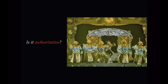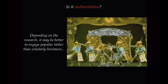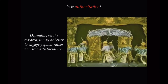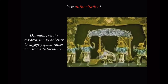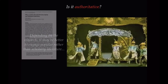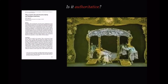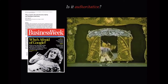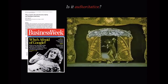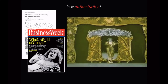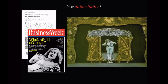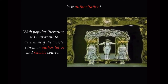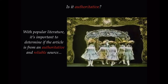Is it authoritative? Depending on the type of research, you may need to engage popular rather than scholarly literature, and this is especially true when your research topic is a current or recent event. Scholarly articles take time to research, write, review, and publish. Popular literature is often published very quickly and is able to respond to recent news and events almost immediately.